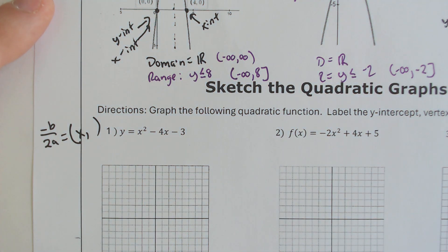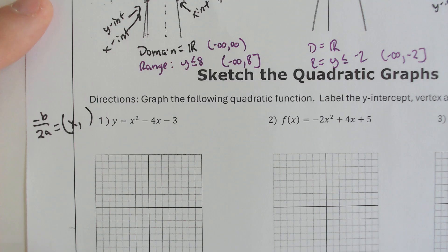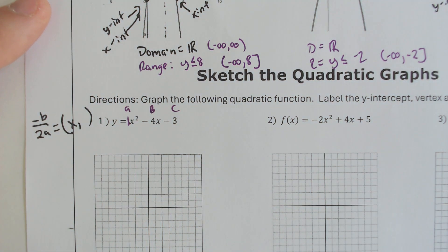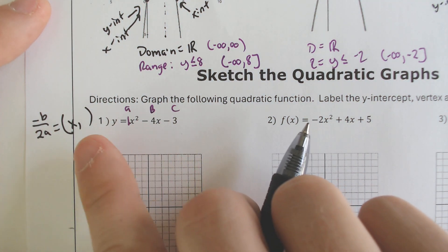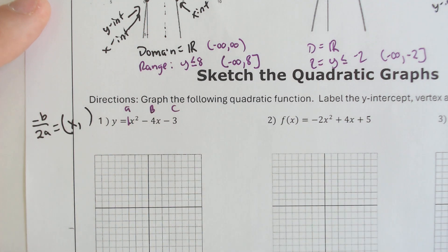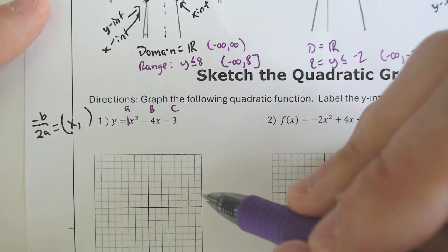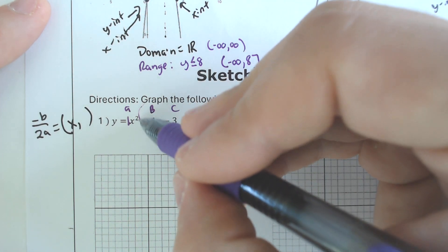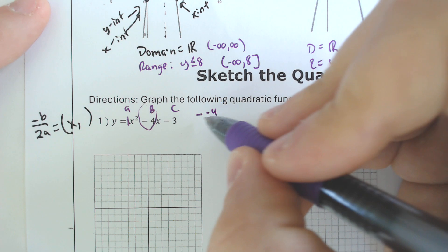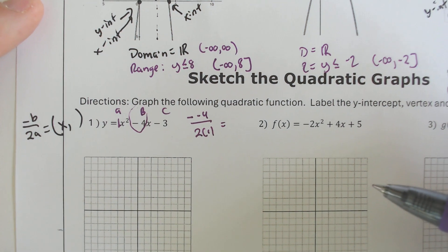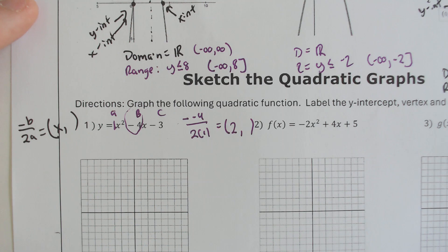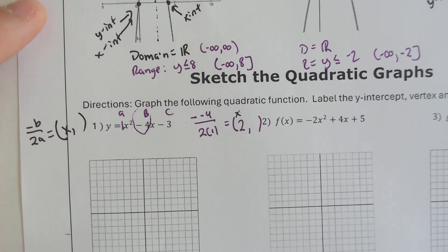Negative b over 2a tells you the x-value of the vertex. Your a, your b, and technically your c are found with the numbers in front of the x-squared, the number in front of the x, and the number that is just off to itself. It is not 1x-squared for a — the number for a would just be 1. So negative b: b is already negative 4. Negative negative 4 over 2 times 1 — negative negative 4 turns into positive 4, over 2 makes 2. Once you get the x-value of the vertex, you need to plug that x-value in to get the y-value.